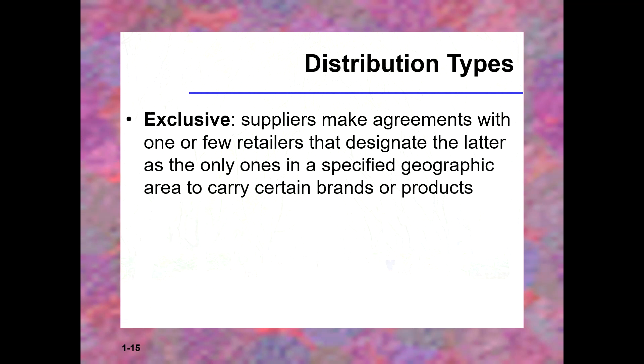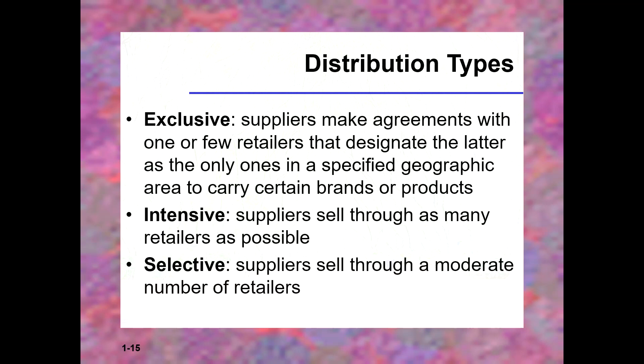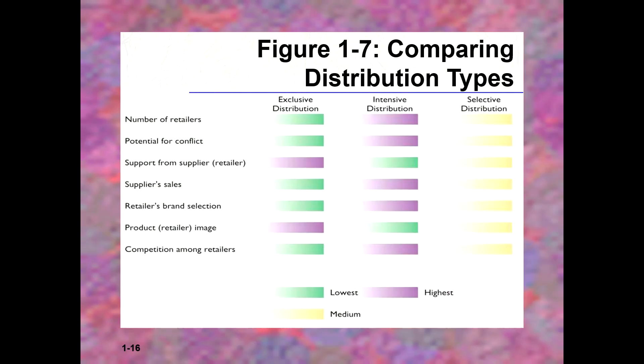There are three distribution types: exclusive — where suppliers make agreements with one or a few retailers designated as the only ones in a specified geographic area; intensive — where suppliers sell through as many retailers as possible; and selective — where suppliers sell through a moderate number of retailers. There's a graph showing these types, plotting number of retailers versus potential for conflict and support from the supplier.